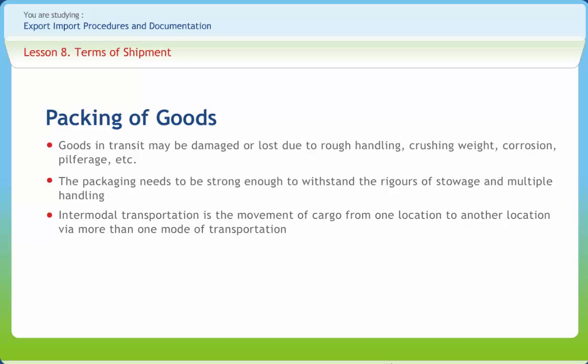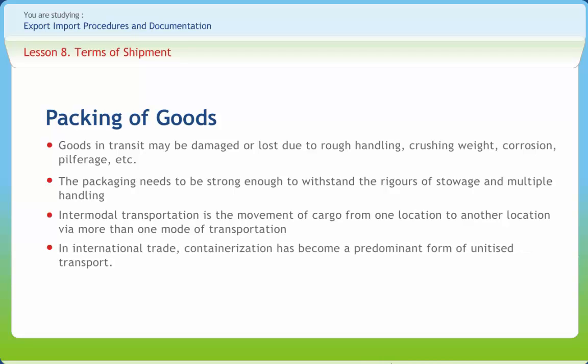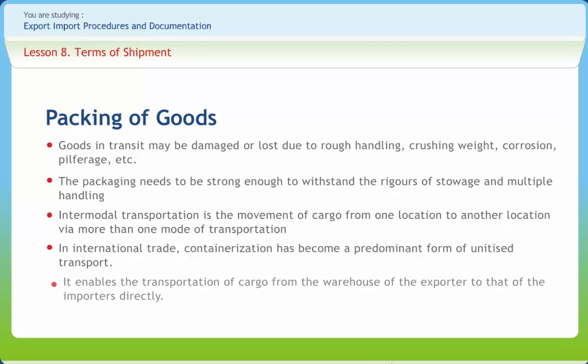Unitization in general terms may be defined as consolidation of a number of bags, boxes, packs, etc. in a single cargo unit, the most important of which is the container. In international trade, containerization has become a predominant form of unitized transport. It enables the transportation of cargo from the warehouse of the exporter to that of the importers directly.